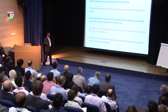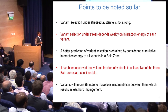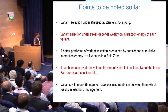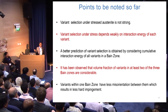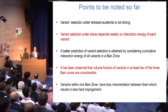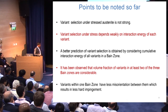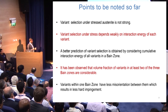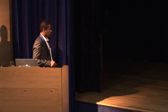To summarize variant selection under stress: the selection is not strong under stressed austenite. It depends weakly on the interaction energy of each variant individually, but you get a better prediction when considering the cumulative interaction energy of all variants within a Bain zone. At least two of the three Bain zones tend to have quite high volume fractions, while variants within one Bain zone have less misorientation, which causes less hard impingement and promotes mutual growth.